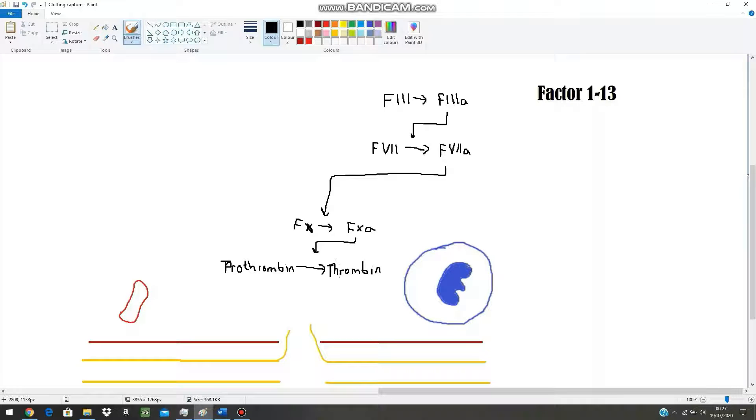thrombin helps to convert fibrinogen, which is the precursor of fibrin, to fibrin. And the fibrin can finally help to form that fibrin sheath over the platelet plug once it's formed.